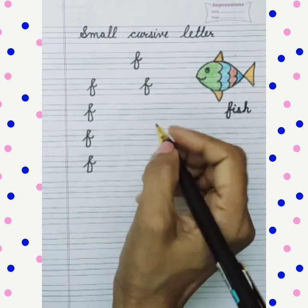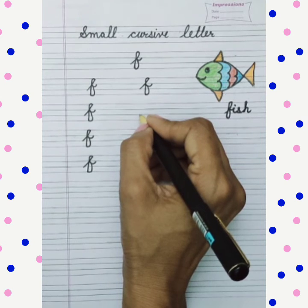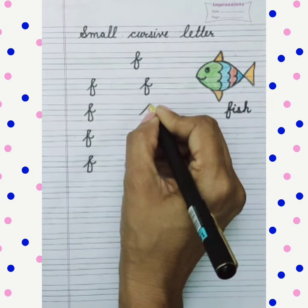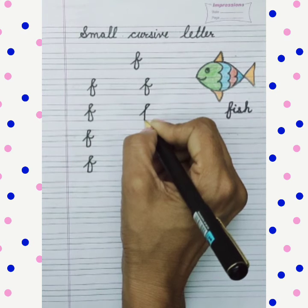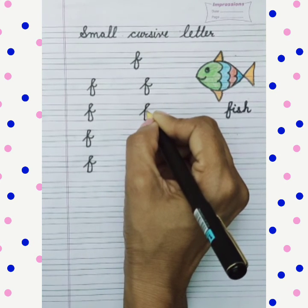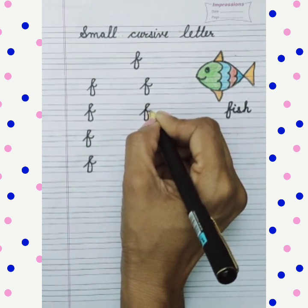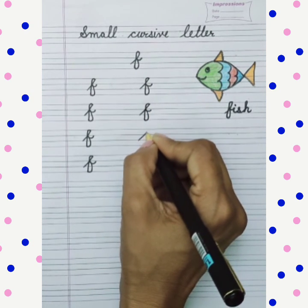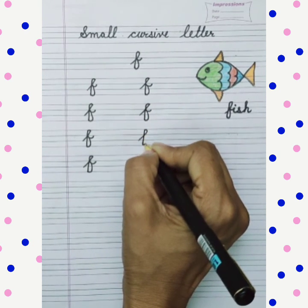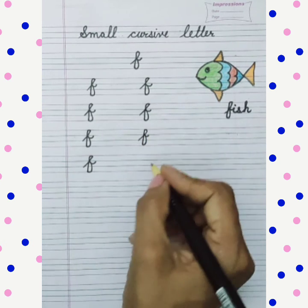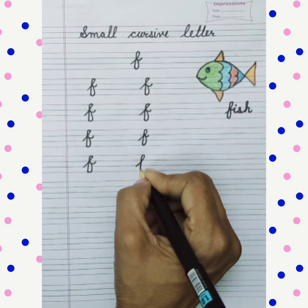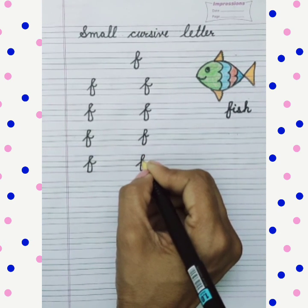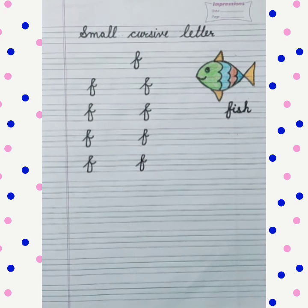This way you have to write F. Make a big slash, touch the first line, make a loop, come down, touch the fourth line, make a curve, touch the midpoint, and go out. F for fish. You have to do a full page. Thank you.